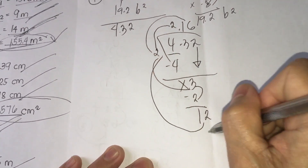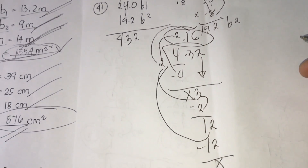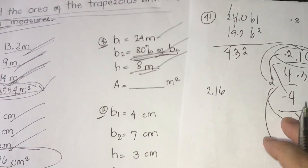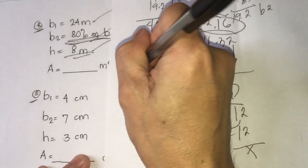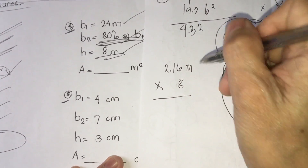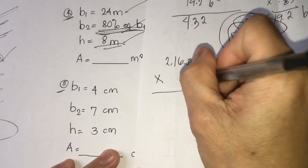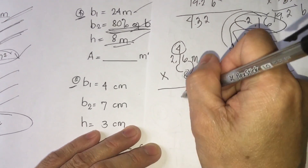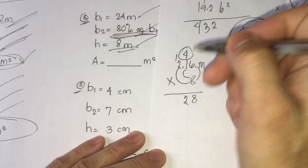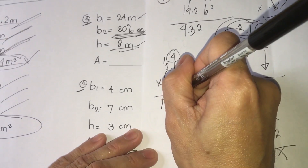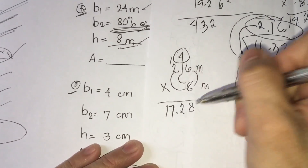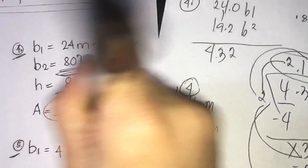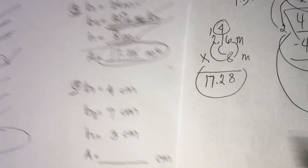We divide 43.2 by 2. Four divided by 2 is 2; bring down 3, divided by 2 is 1, remainder 1; bring down 2 to get 12, divided by 2 is 6. So we get 21.6. Then multiply by height 8 meters: 6 times 8 is 48, regroup 4; 1 times 8 is 8 plus 4 is 12; 2 times 8 is 16 plus 1 is 17. Our answer for number four is 17.28 meters squared.